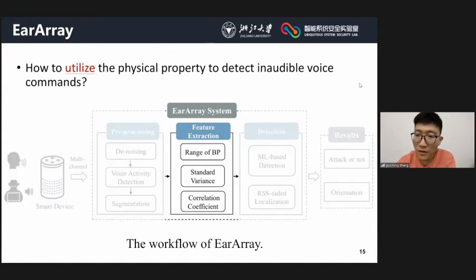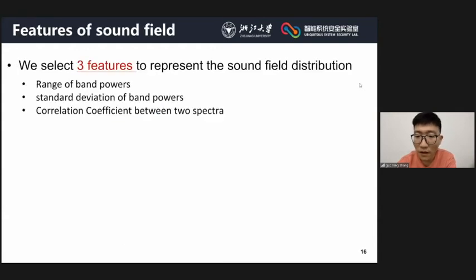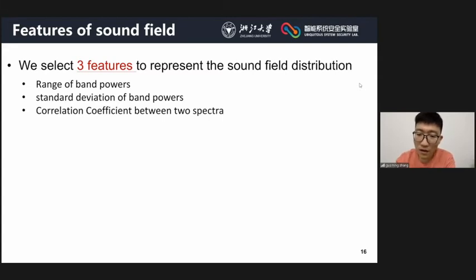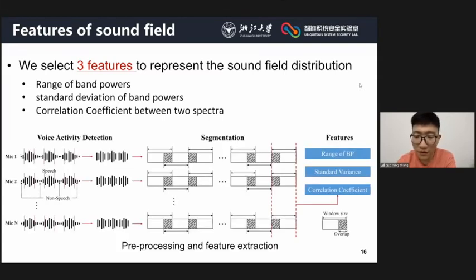The key question is which features can represent the sound field distribution and are useful for classification. In this paper, we selected three features: the range of band powers of multi-channel signals, the standard deviation of band powers, and the correlation coefficient between the spectra of the two largest signals. This figure shows the process of feature extraction.